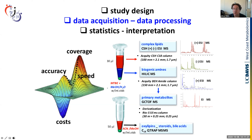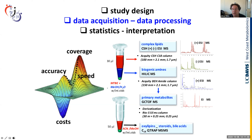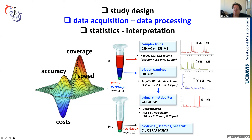For lipidomics, we use a 2.1 mm, 1.7-micron column, 10 cm long, with about 30 microliters of plasma in a biphasic extraction with MTBE and methanol/water — getting lipids first, then polar compounds analyzed by HILIC, and primary metabolites like sugars and hydroxy acids by GC-MS. For compounds too low-abundant for this approach — oxalipins, steroids, bile acids — we have specific targeted methods for these low-abundance compound classes.